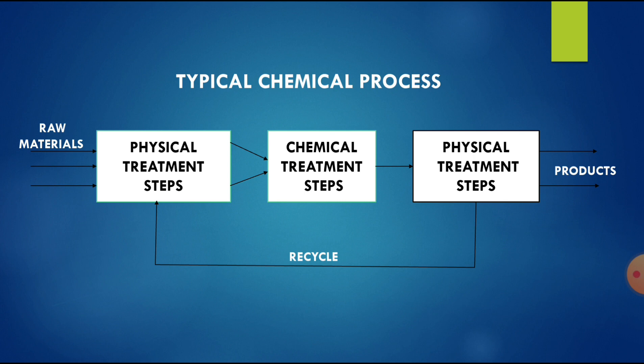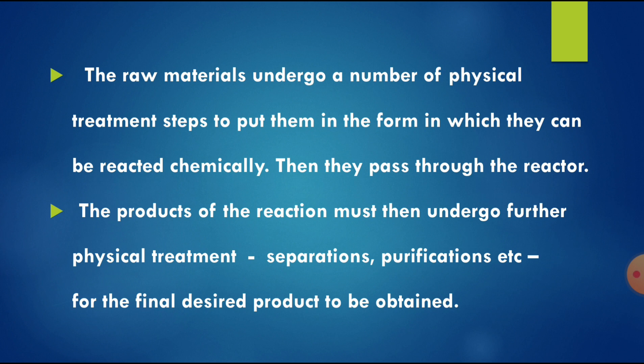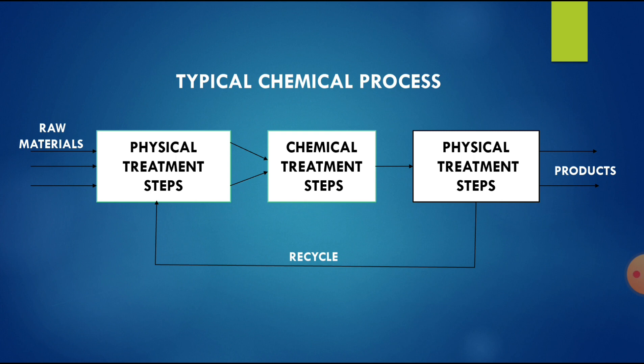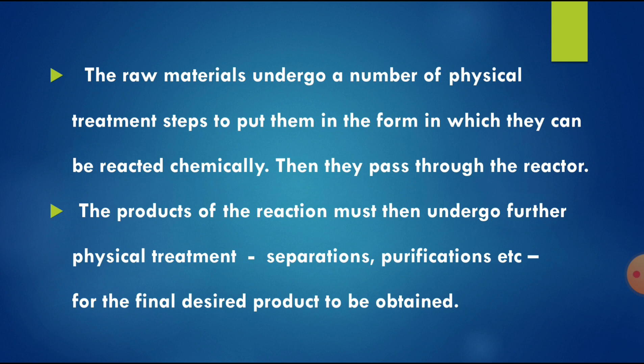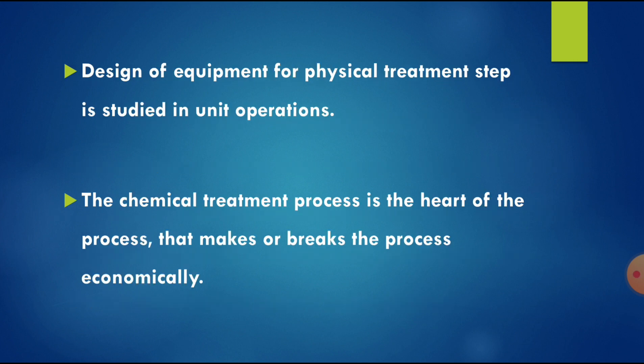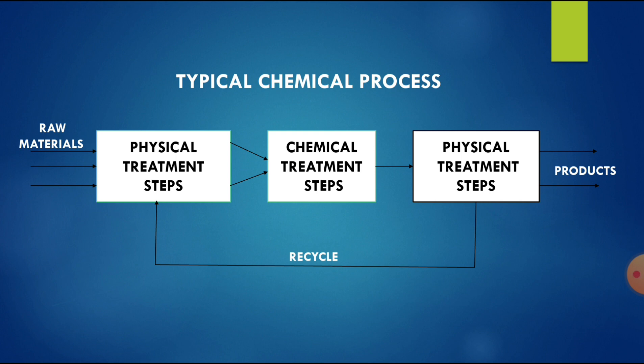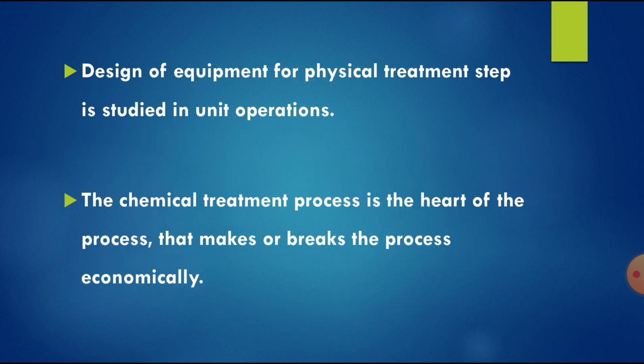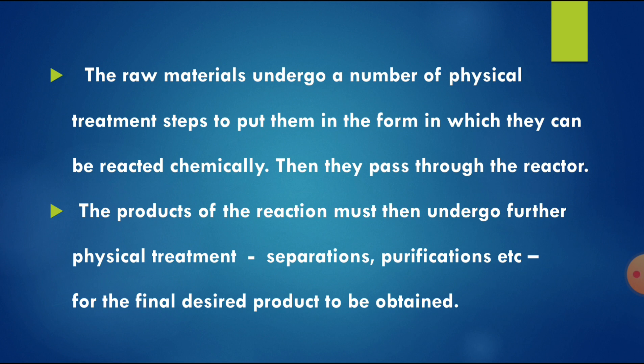In detail, the raw materials undergo a number of physical treatment steps to put them in the form in which they can be reacted chemically. Then they pass through the reactor, and the products of the reaction must undergo further physical treatment — separations, purifications, etc. — for the final desired product to be obtained.